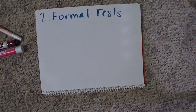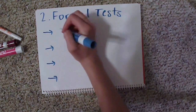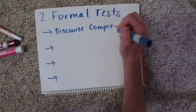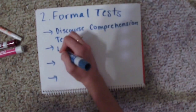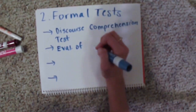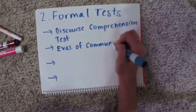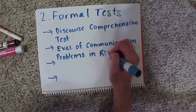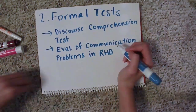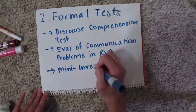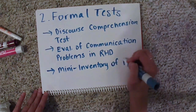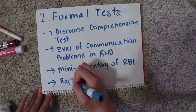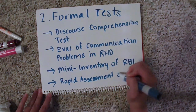There are many formal tests that can assess cognitive and communication deficits associated with RHD. Some examples are the discourse comprehension test, the evaluation of communication problems in right hemisphere dysfunction, the mini inventory of right brain injury, the rapid assessment of problem solving, and more.